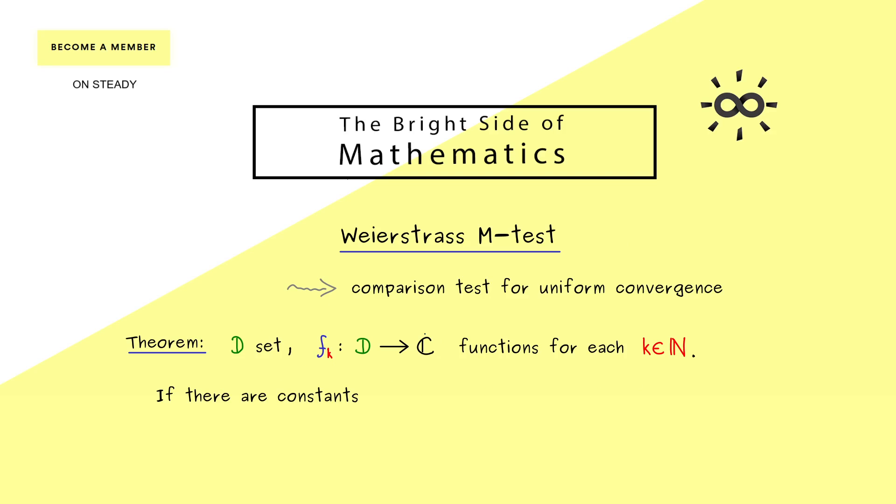And to have the convergence of this series, we assume that we have constants with the name m. And as already mentioned, this is the whole reason we call it the M-Test. Now we have two assumptions for these constants. First, they should be non-negative. And second, the series should be convergent.